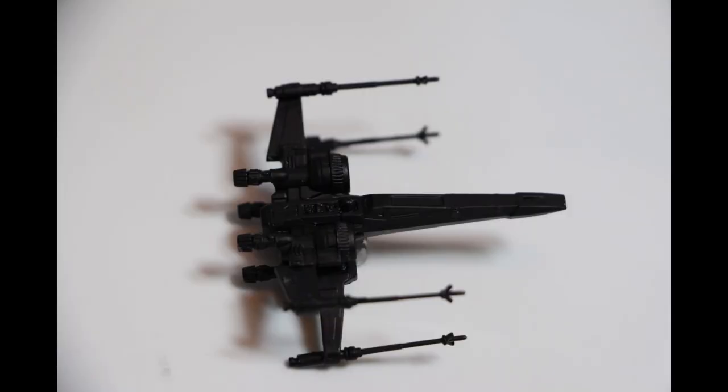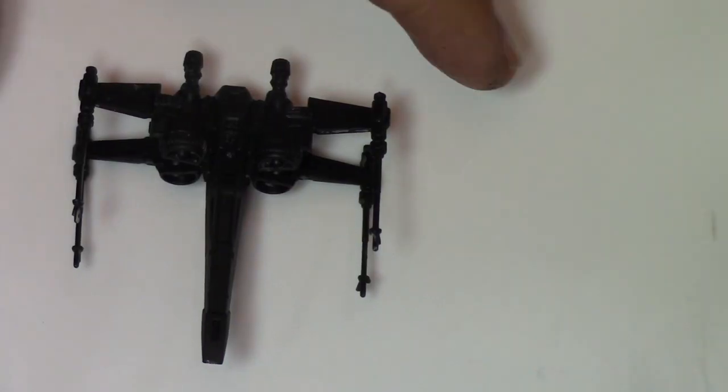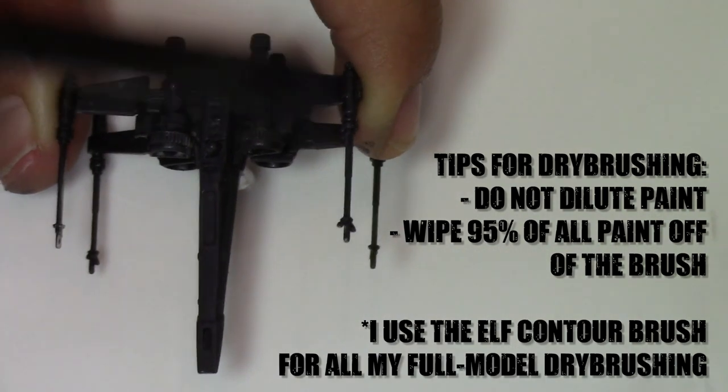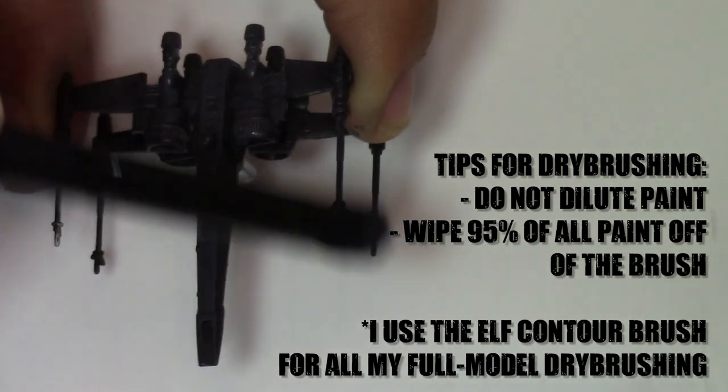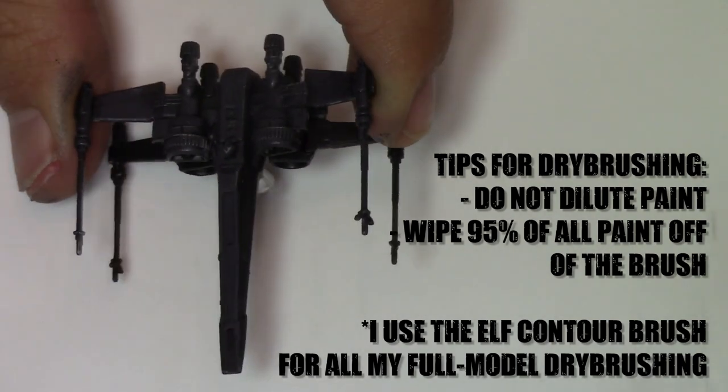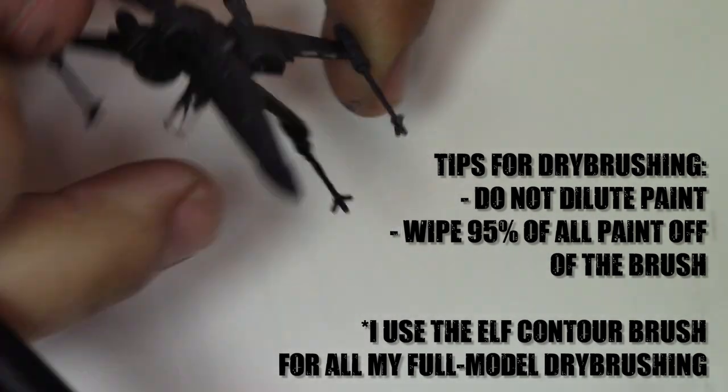Next, we're going to dry brush. Now, dry brushing is the technique where you take a brush, you load it up with paint straight from the bottle, not watered down, and you wipe like 95% of it off on a paper towel. You pretty much brush it off until almost no paint is coming off the brush.